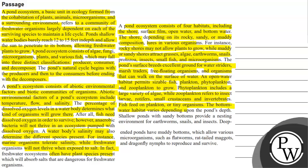The bottom water habitat varies depending on the pond's depth. Shallow ponds with sandy bottoms provide a nesting environment for earthworms, snails and insects. Deep-ended ponds have muddy bottoms, which allow various microorganisms such as flatworms, rat-tailed maggots and dragonfly nymphs to reproduce and survive.